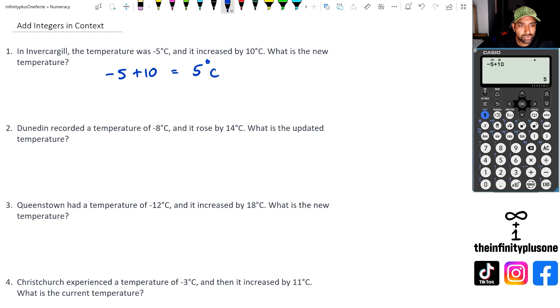Awesome. Going to question number two, Dunedin recorded temperature of minus eight degrees, and then it rose by 14 degrees. So it is actually increased by 14 degrees. So we're going to add 14 to this. And what's the updated temperature now? And I know I've already shown you how to do this in the calculator with integers, sometimes people get confused with it.